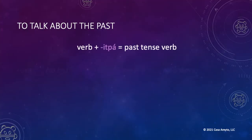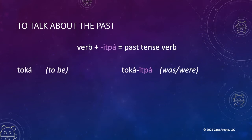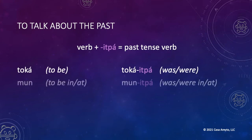So let's take a look at some examples of some verbs you already know to compare the present tense and the past tense. Toka: to be. Tokaitpa: was or were. Moon: to be in or at a place. Moonitpa: was or were in or at a place.